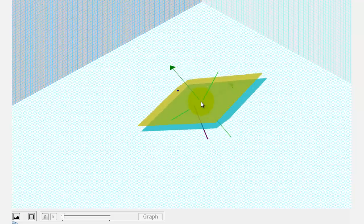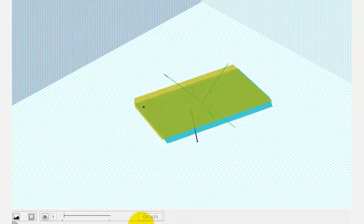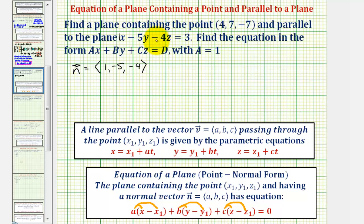So we have all the information we need in order to find the equation of this yellow plane containing the blue point. Because the plane contains the point (4, 7, -7), for the point-normal form we can let a = 1,